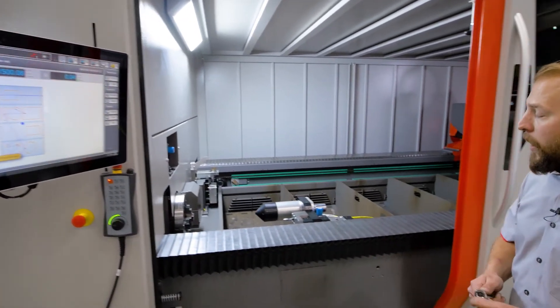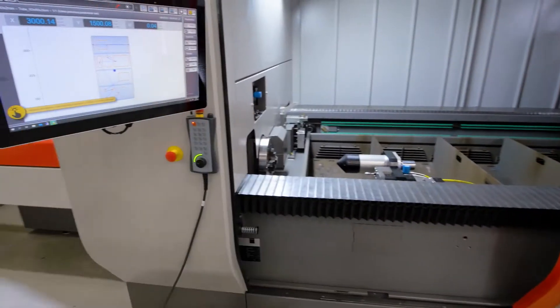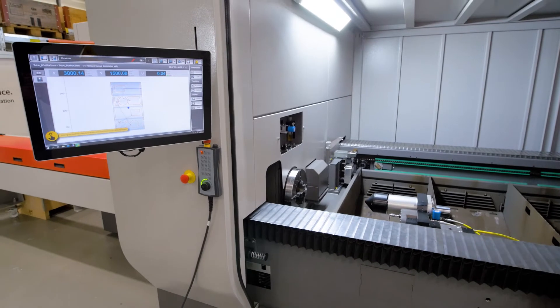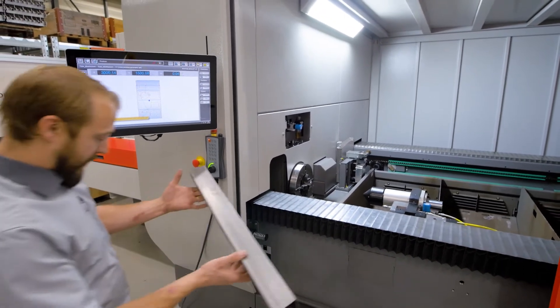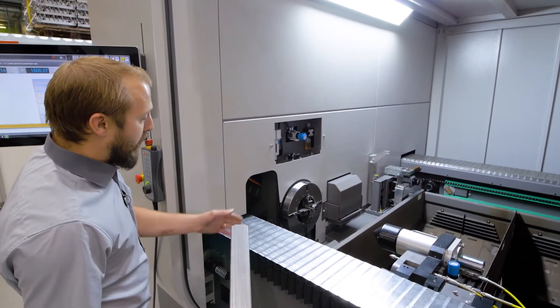Now we have to add material inside the machine. If we have just a short tube like in this case, it's quite easy. We are opening here the chuck.